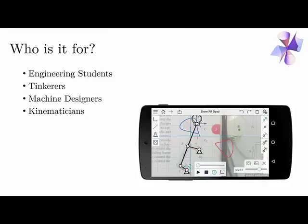So who is MotionGen for? MotionGen is for machine designers. Linkages form the heart of any machine, and we wanted to create a nice, intuitive, easy-to-use app that engineering students could use to design small machines and robots. We use this app in our freshman design innovation class at Stony Brook as well as in some of the higher level classes.